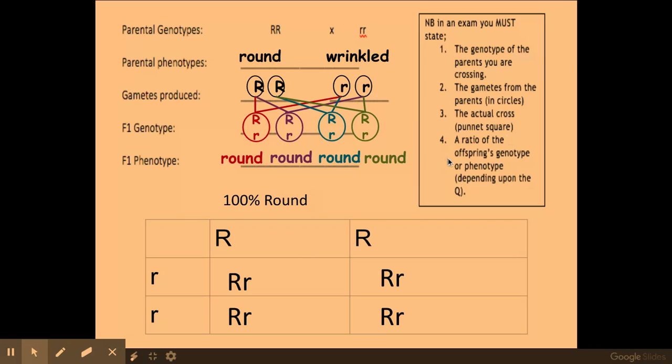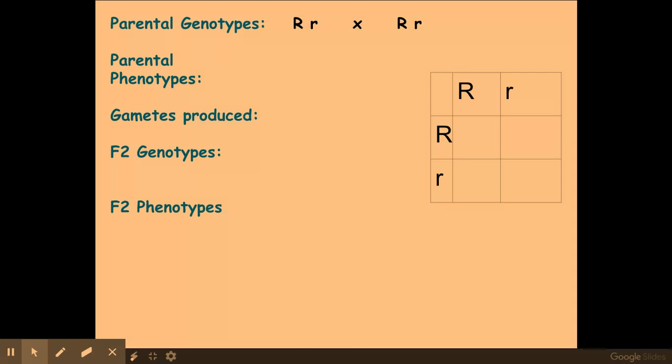Quite often what they ask you to do is cross two individuals from your F1 generation to create an F2 generation. My parental genotypes would be a big R and small r each, they'd both be round individuals. The gametes produced by each are a big R and a small r each, and I put them into my Punnett square to do my cross. I've got a big R and big R together, a round individual there. Big R and small r, another round individual, these are heterozygous. Another heterozygous individual here but still round, and then I've got a homozygous recessive, so this individual would be wrinkled.